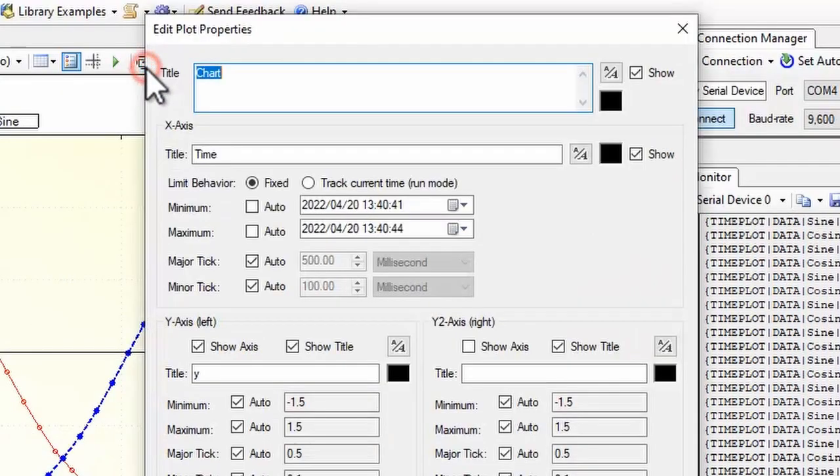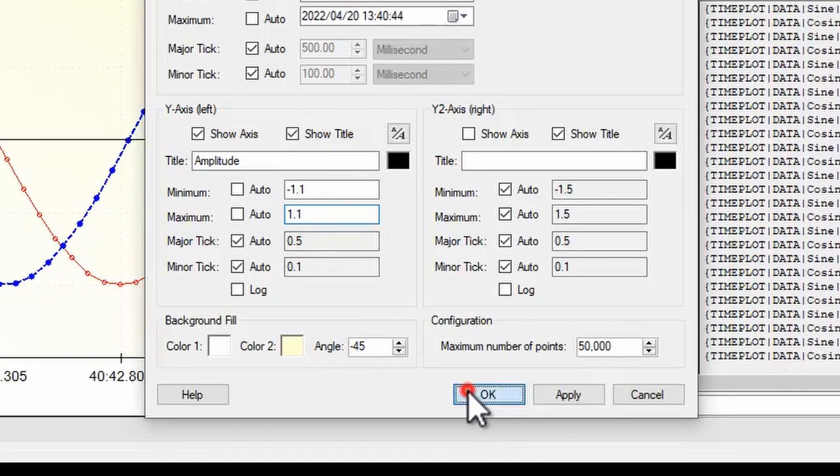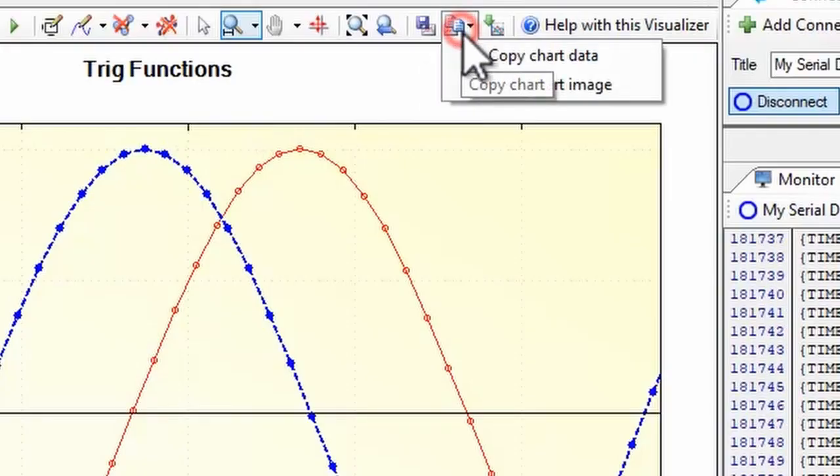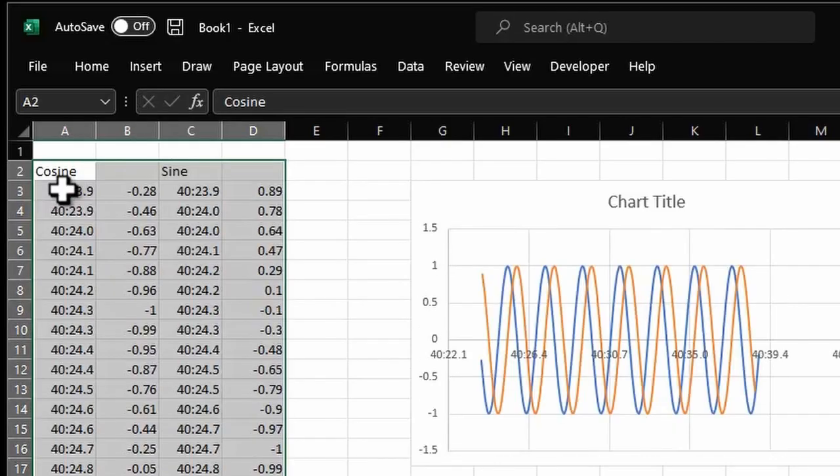Open the plot properties dialog to change titles and axis limits. To use the data from the chart in another program, you can export it to a text file or onto the clipboard. Then import it for more analysis.